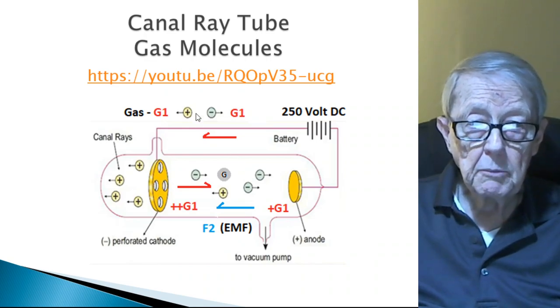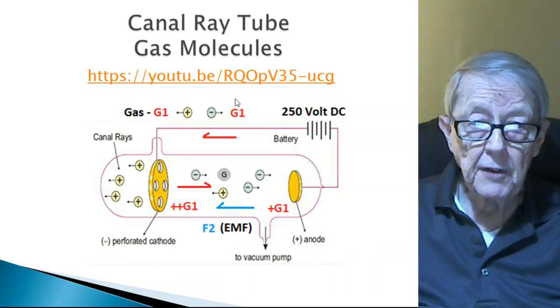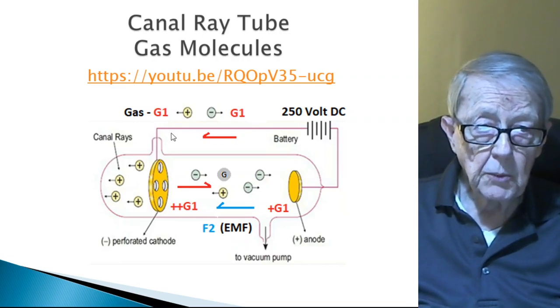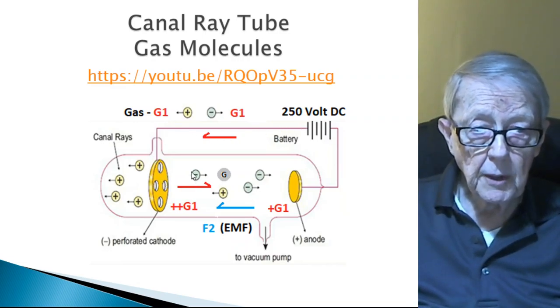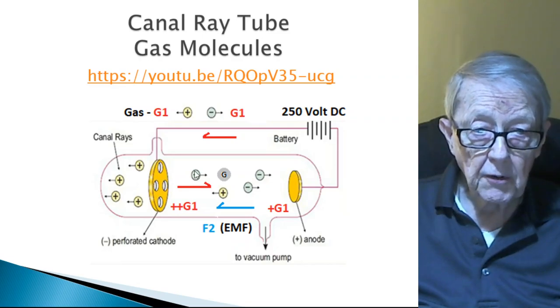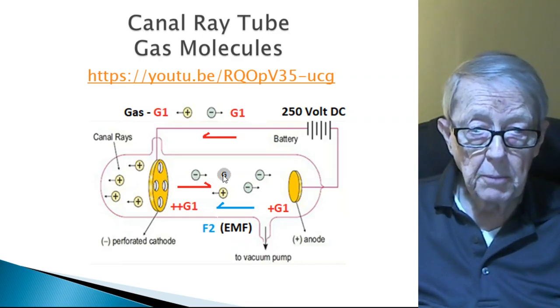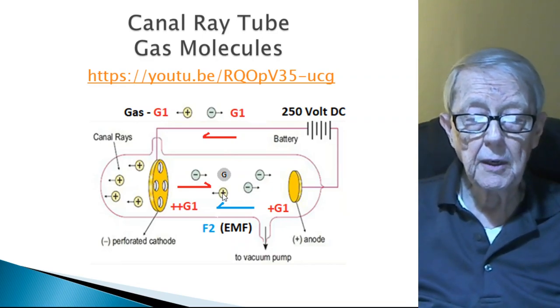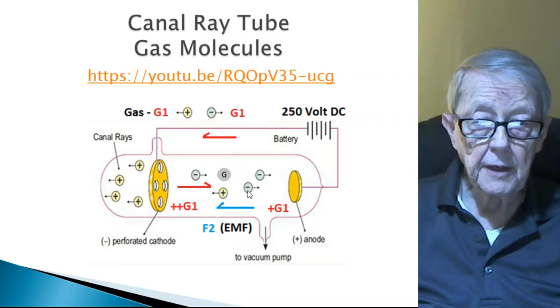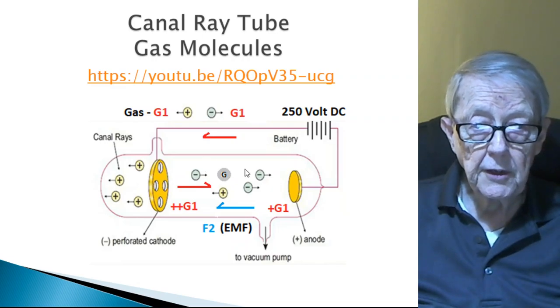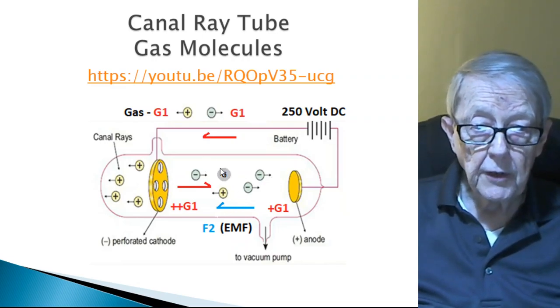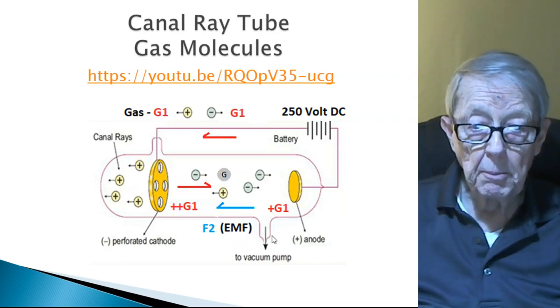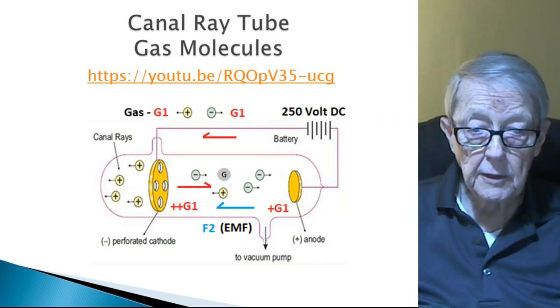Canal ray tubes emit the battery, emits G1 particles, which is an electron, that is a G1 particle, hits a gas molecule, splits it into a positive ion and an electron, and it continues on. So we're splitting, we're smashing the gas atom in this particular video.